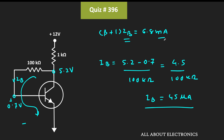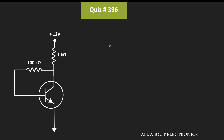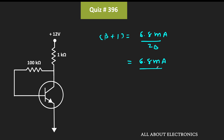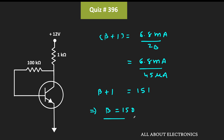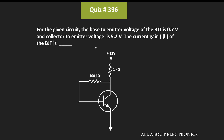We got the value of the base current, so now let us put this value into the equation. We get beta plus 1 is equal to 6.8 milli-ampere divided by 45 micro-ampere, which is roughly equal to 151. Therefore, beta plus 1 equals 151, and the value of the current gain beta is equal to 150. So for the given circuit, the value of the current gain beta is equal to 150.